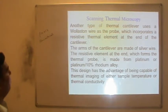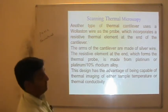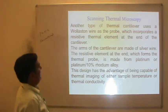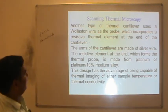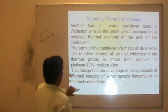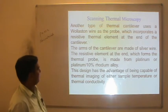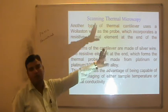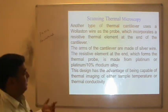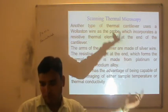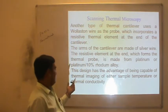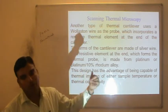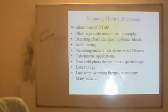Another type of thermal probe used in scanning thermal microscopy uses a Wollaston wire as the probe, which incorporates a resistive thermal element at the end of the cantilever. The arms of the cantilever are made up of silver wire, and the resistive element at the end — which forms the thermal probe — is made from platinum or platinum-10% rhodium alloy. Various alloys are also possible to use.